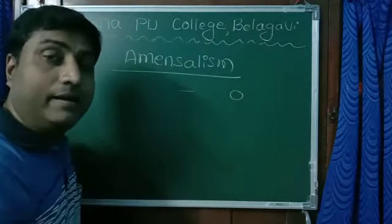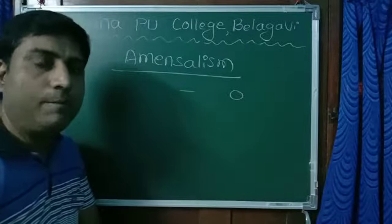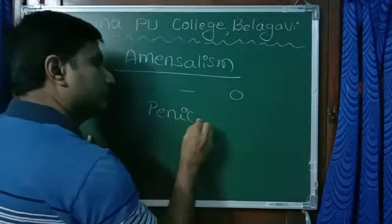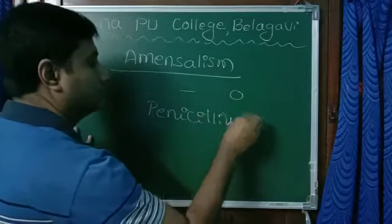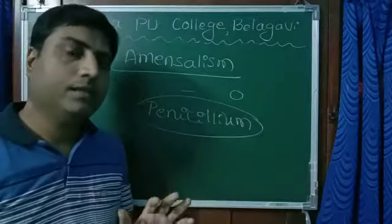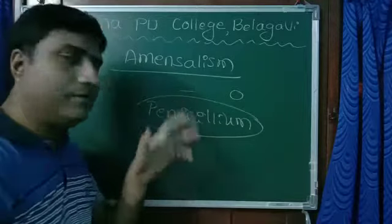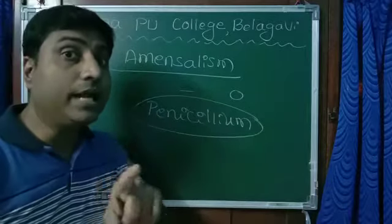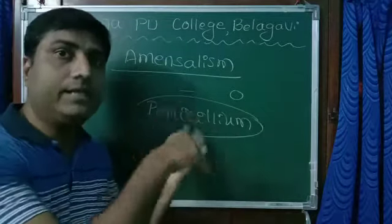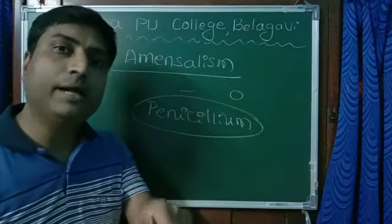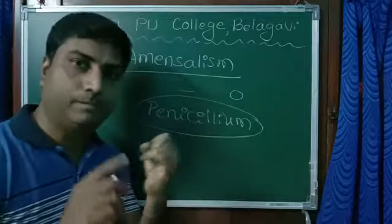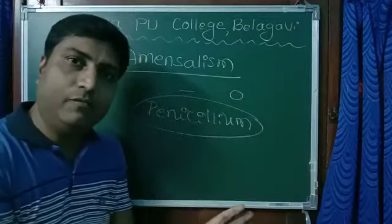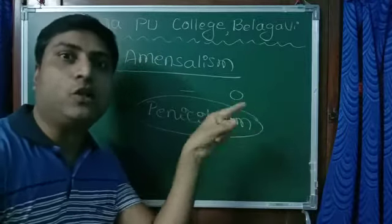You can give the example of Penicillium — it is one of the fungi. They form their colony, and if a bacteria enters into that colony, what they do is kill that bacteria. Penicillium fungi kill that bacteria with the help of an antibiotic. Why do they kill the bacteria? No reason — bacteria is not their food, nor will bacteria cause any harm to them. So Penicillium will not get any benefit or any loss, but the bacteria is at loss because it's going to die.